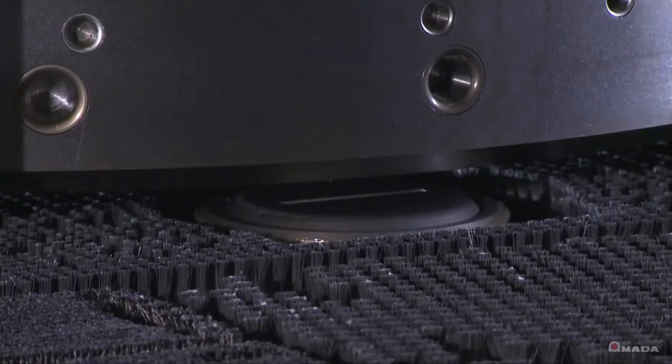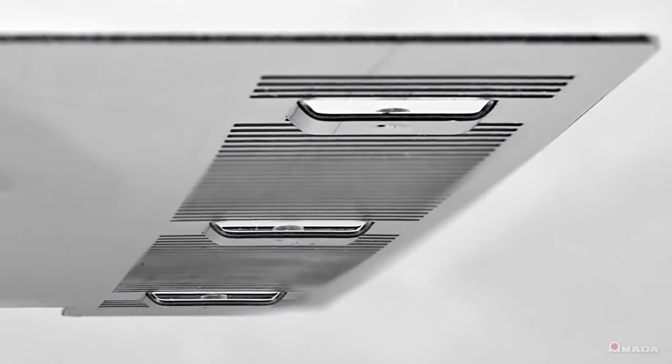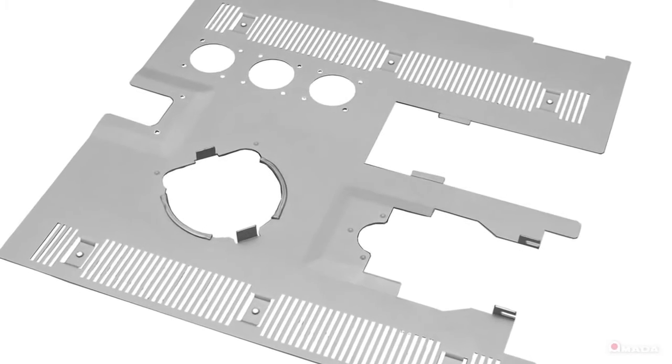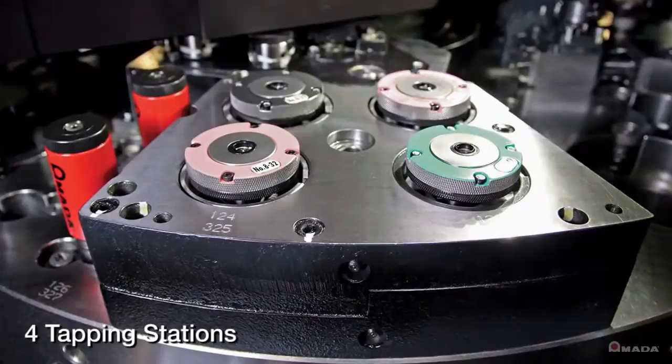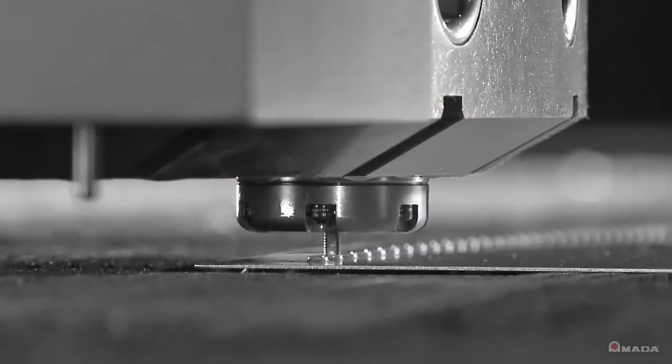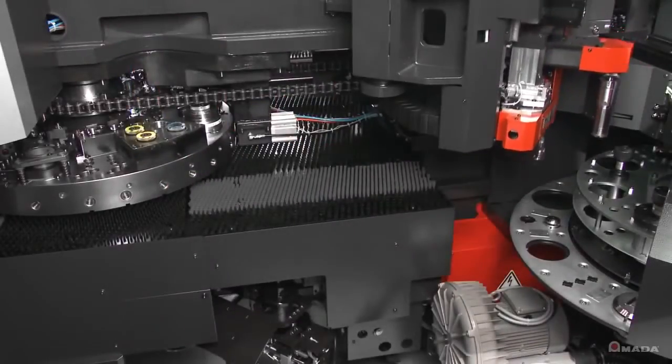Retractable die stations and a full-size brush table allow forming processes such as extrusions and tabs to be processed efficiently. The ZR turret comes with four tapping stations which accept either standard or metric taps.